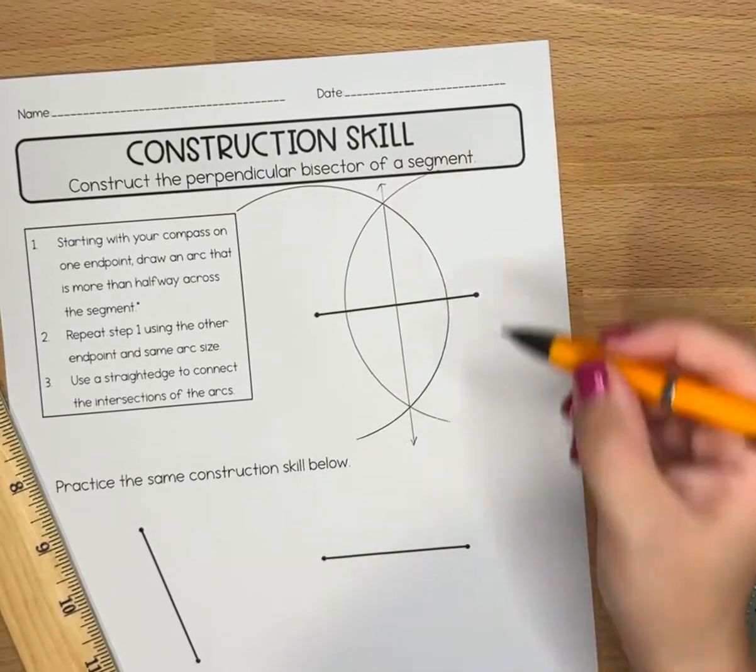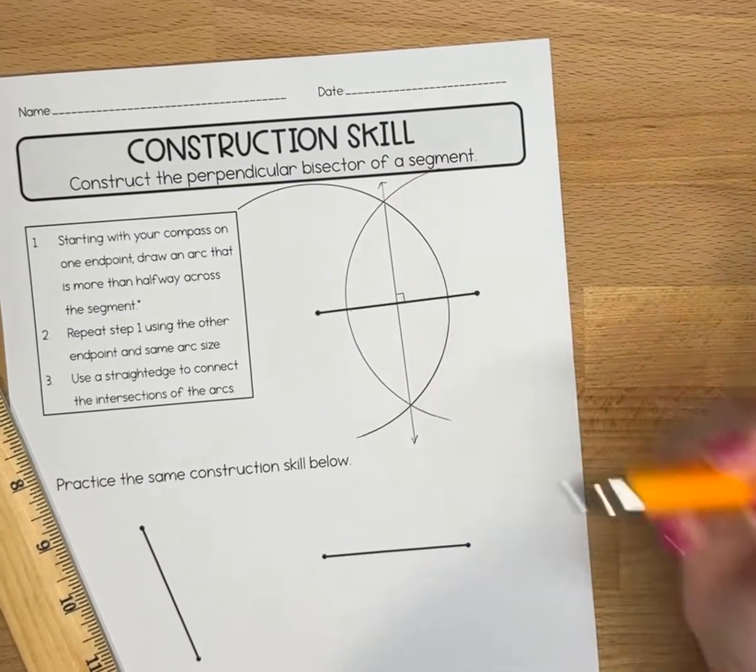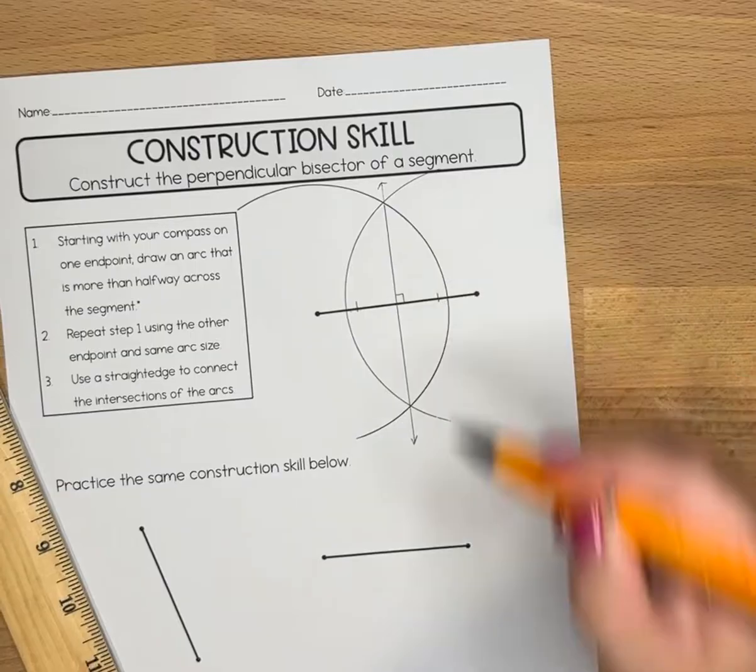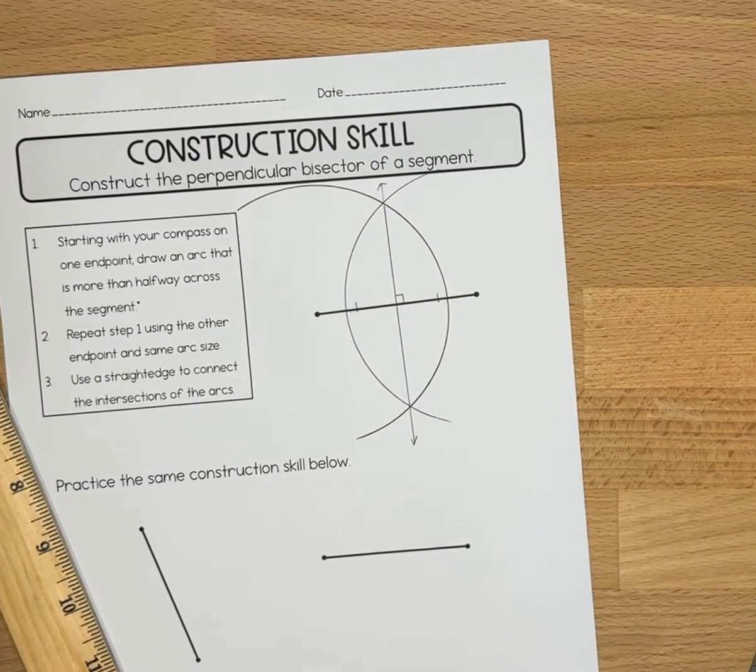And there is our perpendicular bisector. It is perpendicular to the given line segment and has also split it into two congruent parts, therefore bisecting it.